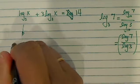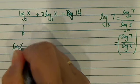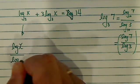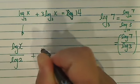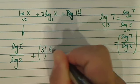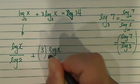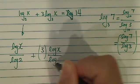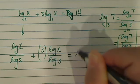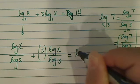So the first one I have is log base 10 of x divided by log base 10 of 2 plus 3 times log base 10 of x divided by log base 10 of 3 is equal to 14.